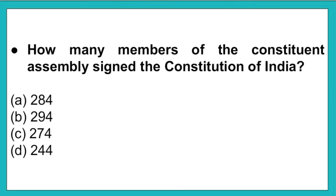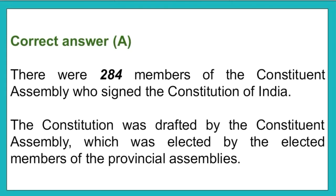The next question: How many members of the constitution assembly signed the constitution of India? Option A: 284. Option B: 294. Option C: 274. Option D: 244. The correct answer is option A, that is 284 members of the constitution assembly signed the constitution of India. The constitution was drafted by the constitution assembly, which was elected by the elected members of the provincial assemblies.